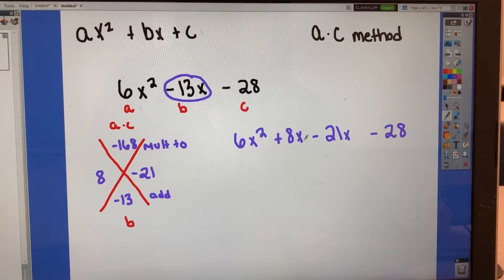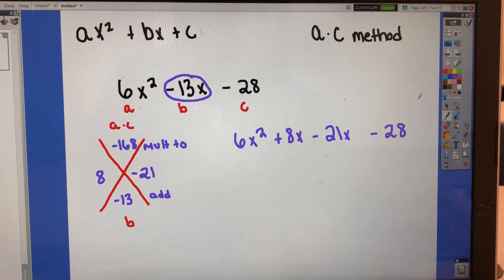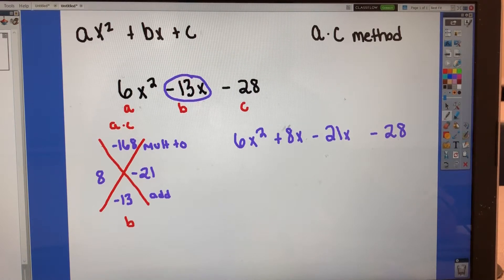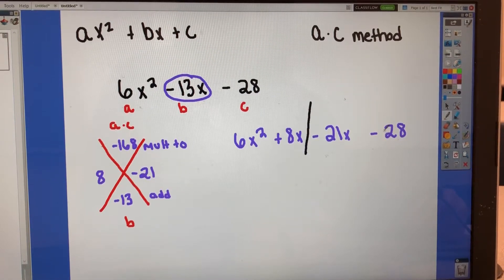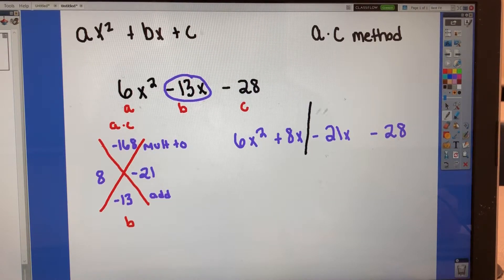Now what we're going to do is factor by grouping. So this is where I said the order doesn't matter. So you just want to make sure that you can factor this by grouping. 6 and 8 are going to have a common term, and 21 and 28 will as well. So this is okay to factor by grouping. If you couldn't find a GCF for either of these, you would just switch them. So you'd put the 21 here and the 8 here.